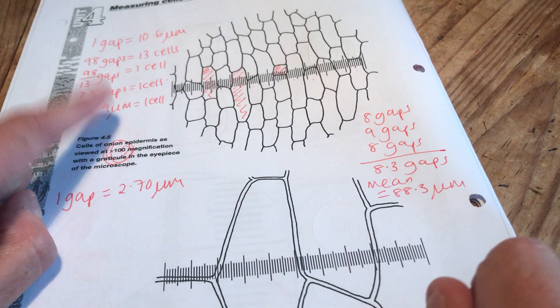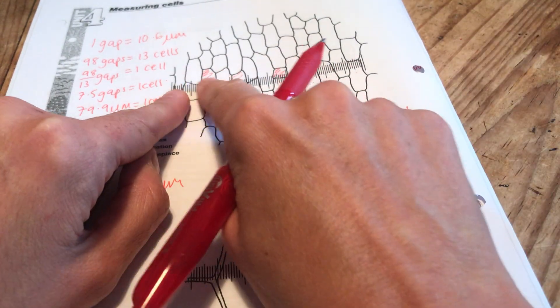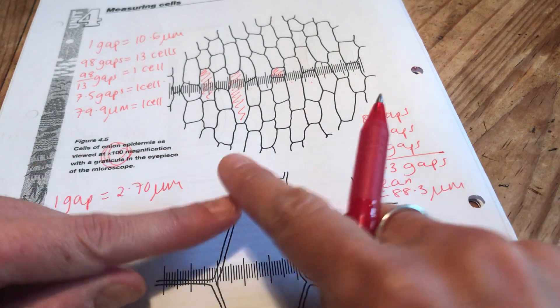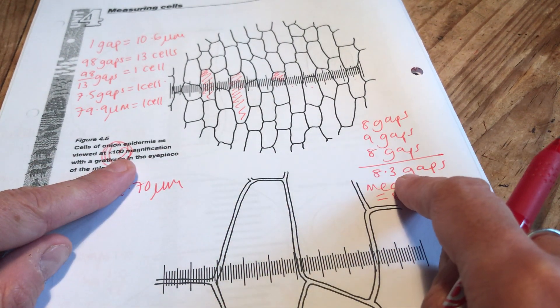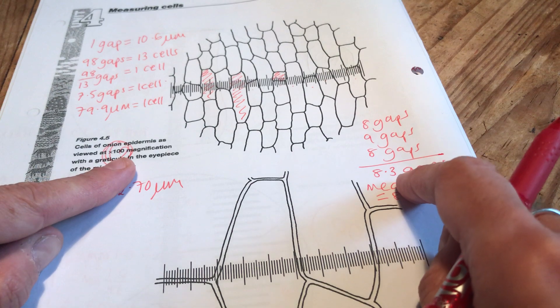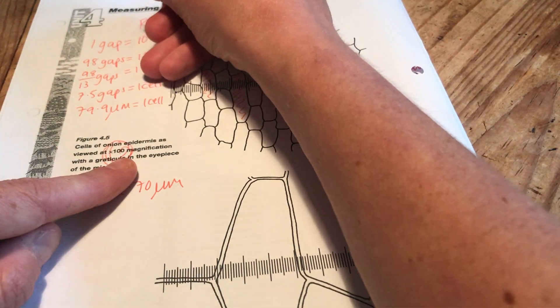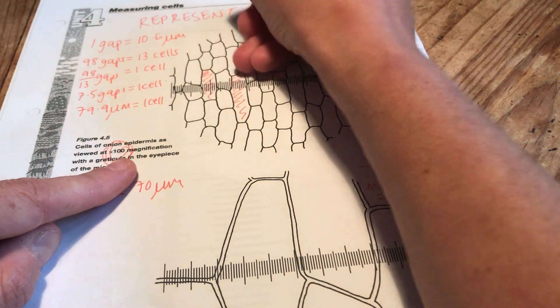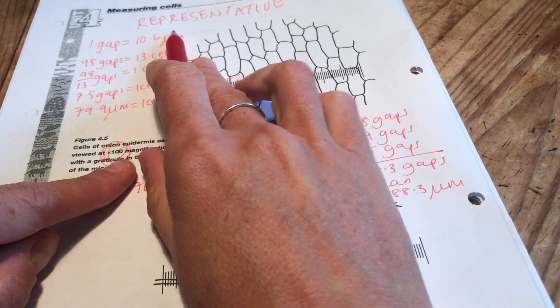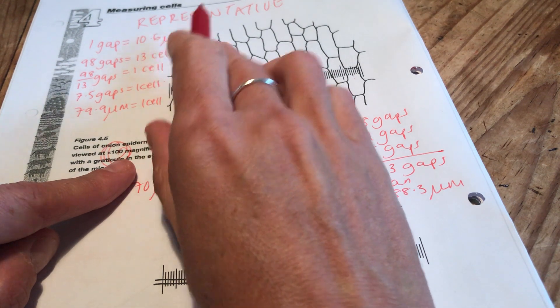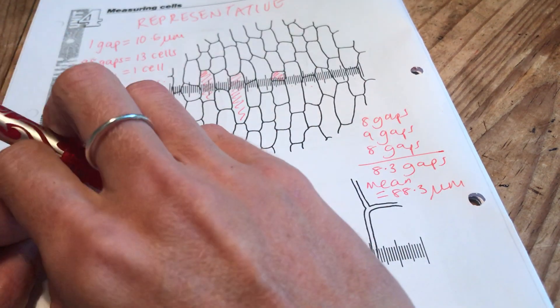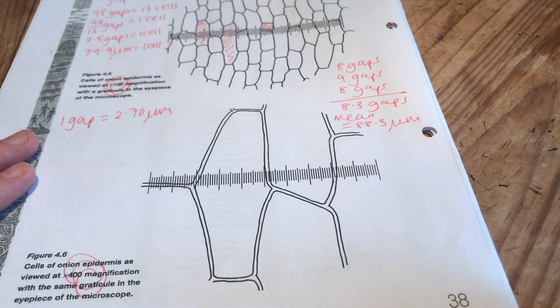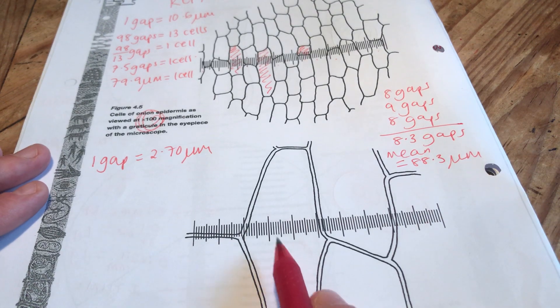Which of those two do I trust? This one. I trust this one more because this one I've taken a mean of 13 cells effectively, this one I've just taken a mean of 3. So the more cells you have in your sample, the more representative. That's the word that we want here. Really important word at A level. The greater the number of individuals in your sample, the more representative that sample is likely to be. The more reliable your mean, or representative your mean.